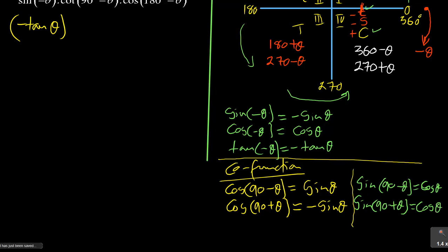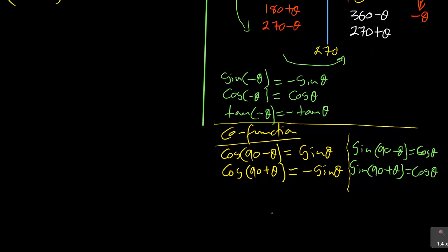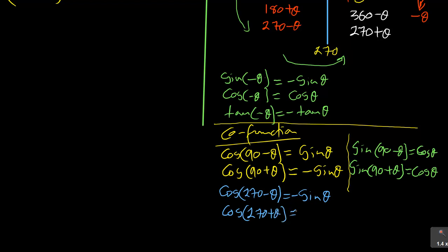Now introducing the 270 versions: cos(270 − θ) — in the third quadrant cosine is negative and it's a co-function — becomes −sin θ. And cos(270 + θ) is in the fourth quadrant where cosine is positive, so it becomes +sin θ.